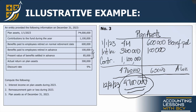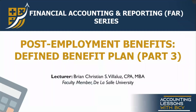At this point, we are done with both DBO and plan assets. Remember: the DBO balance is on the credit side because it is a liability, while plan assets are on the debit side because they are an asset. We are now done with the second part of our discussion on Defined Benefit Plan. In our next lecture video, we will combine all the concepts of defined benefit obligation and plan assets into a comprehensive problem. Don't forget to subscribe to my YouTube channel for more free accounting lecture videos. Thank you for watching.